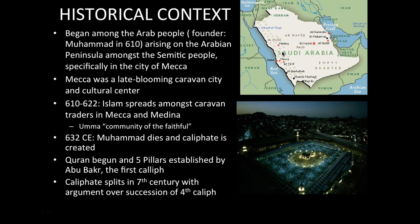Shiite Muslims are mostly concentrated in Iran and Iraq and focus on the study of the Caliphs and Muhammad. The Sunnis, on the other hand, believe that the ummah — the community — should select a leader. Sunni Muslims represent the large majority of people who follow Islam today. They acknowledge the legitimacy of the first three Caliphs, focus mainly on the Quran and its teachings, and represent the rest of the Islamic population across the Middle East, Asia, and Africa. Next, I'm going to talk about stylistic conventions.